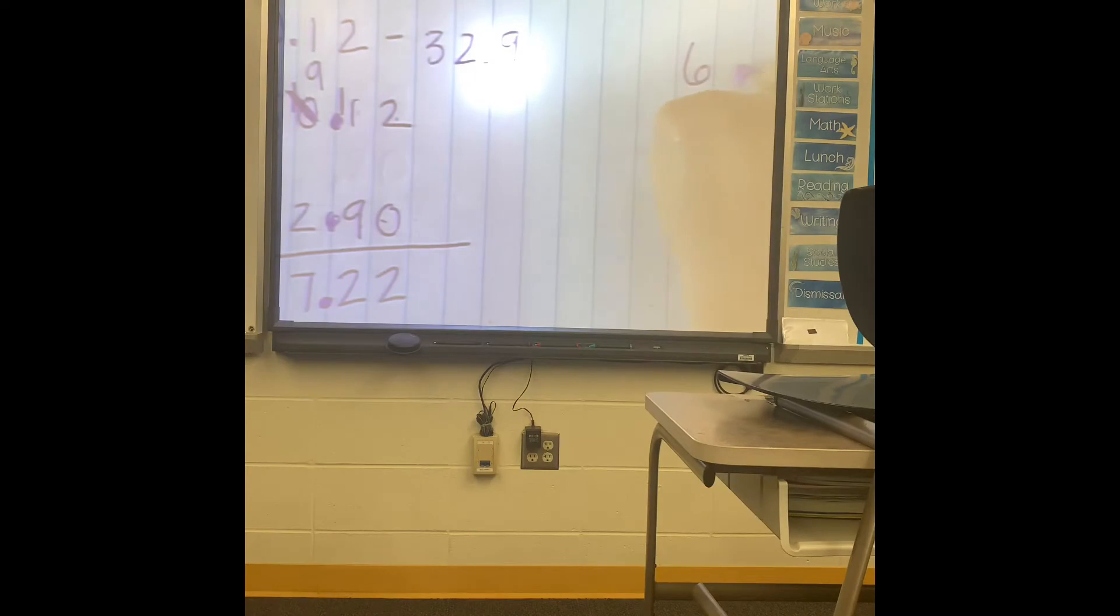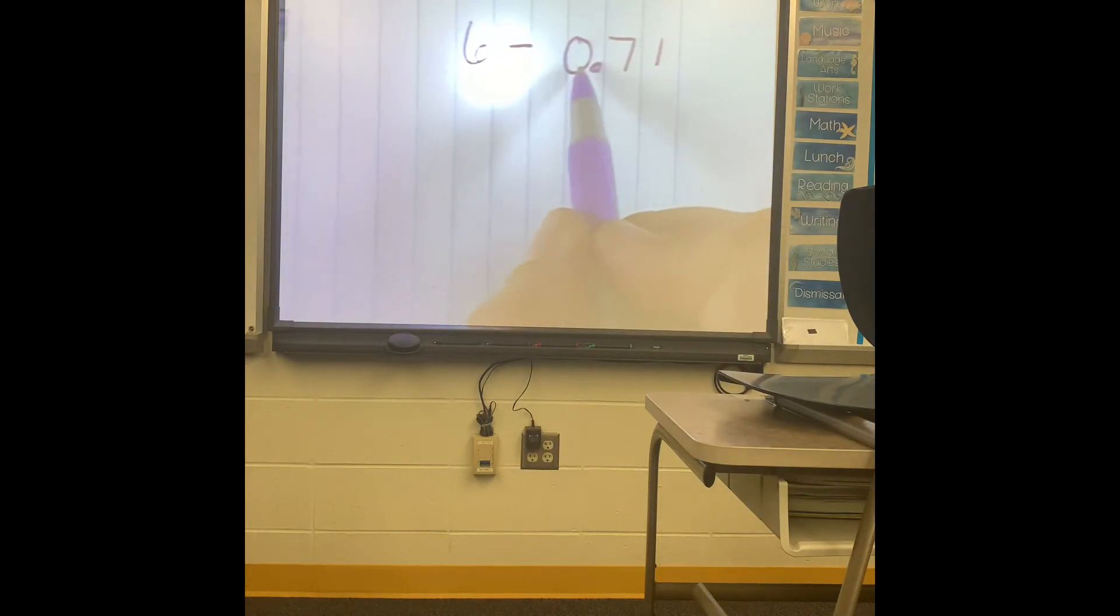Once again, you could have 6 minus 0.71. So we have 6 minus 0.71. I don't see a decimal here. That means it's at the end. So go ahead and put your decimals down. So 6.00 and then 0.71. And you can quickly see where you need to fill in your zeros. I cannot do 0 minus 1. I also can't borrow from a zero. So I have to borrow from my 6, make him a 5. Now he's a 10.